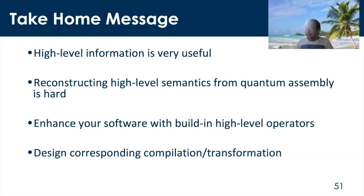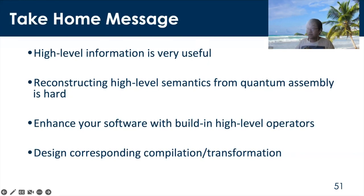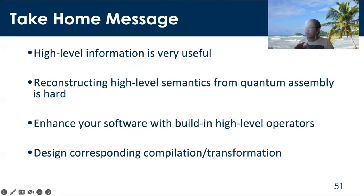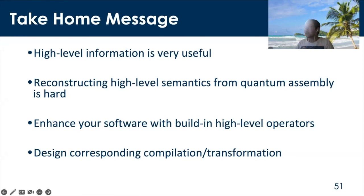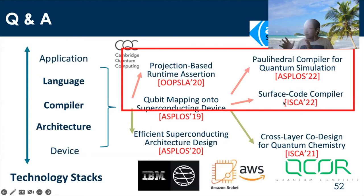Let me summarize the take-home messages. First, high-level information can be very useful but is far from fully utilized in today's quantum software. The difficulty of using high-level information is that reconstructing high-level semantics from quantum assembly-style code and gate sequences is very hard. However, it is possible to enhance your software by building high-level operators and designing corresponding compilation and circuit program transformations based on these high-level languages. That is the most high-level principle we use across all the studies presented today. Thank you.